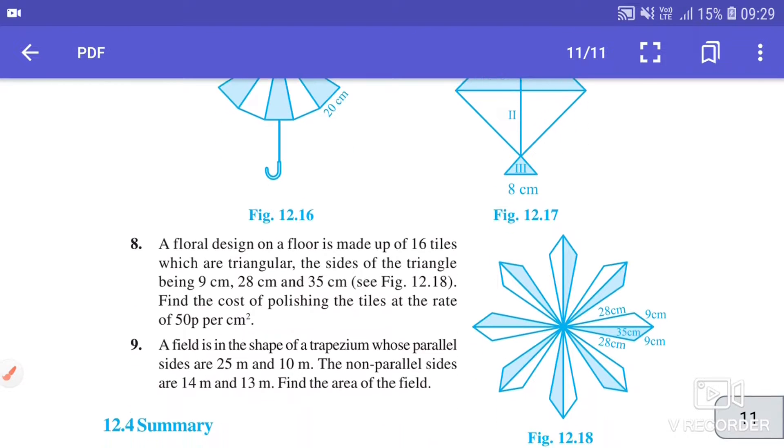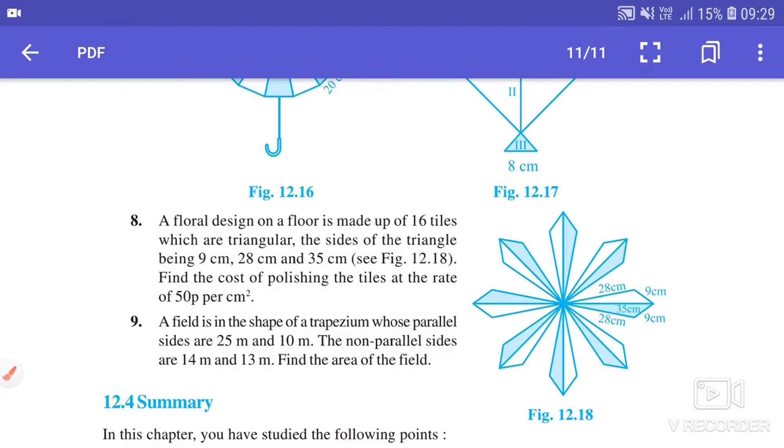Hello students, in this session we are going to continue with exercise 12.2, question number 8. A floral design on a floor is made up of 16 tiles which are triangular, the sides of the triangle being 9 cm, 28 cm, and 35 cm. Find the cost of polishing the tiles at the rate of 50 paisa per centimeter square.